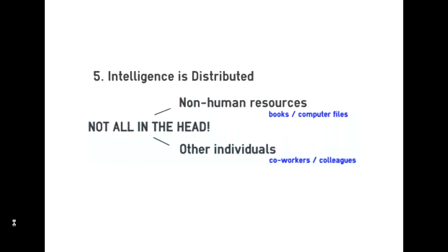Number five: we need to consider that intelligence is distributed. Intelligence is not something we can define as just being the ideas inside somebody's head — it doesn't just exist inside a human brain. It is a collective thing, and it also exists in non-human resources such as books and computer files that contain information. Other people around us may have specific knowledge or skills that we don't have, and their intelligence is also part of collective intelligence. Together we build up intelligence.